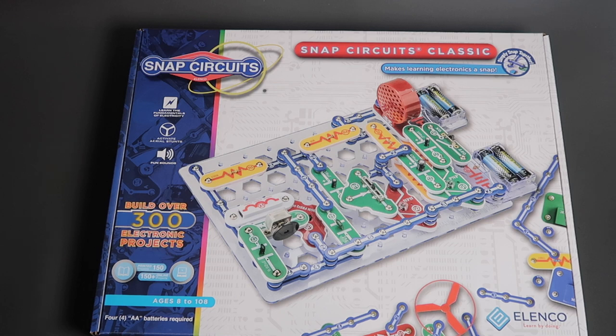Welcome back science parents. In this video we're going to be doing some electronics. In fact we're looking at the Elenco Snap Circuits Classic. It's for ages eight and up and it has 300 electronic projects all done with no soldering, just snap the components together. Let's take a look.